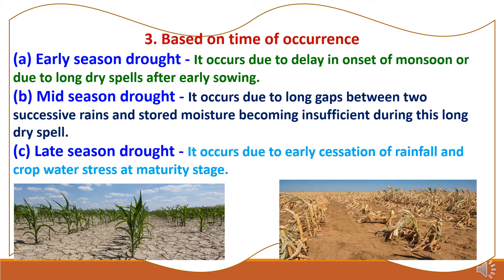The third type of classification is drought based on time of occurrence, which is of three types. First, early season drought occurs due to delay in onset of monsoon or due to long dry spells after early sowings. Second, mid-season drought occurs due to long gaps between two successive rains and stored soil moisture becoming insufficient during this long dry spell. Third, late season drought occurs due to early cessation of rainfall and crop water stress at the maturity stage.